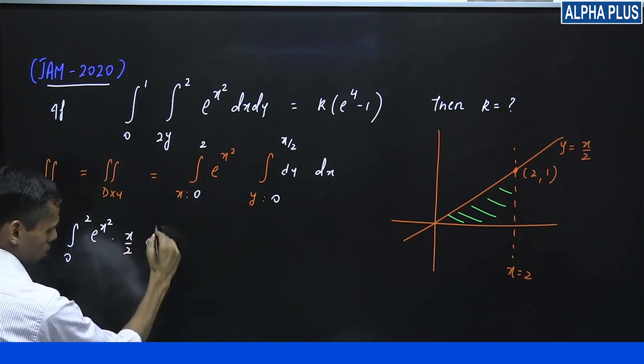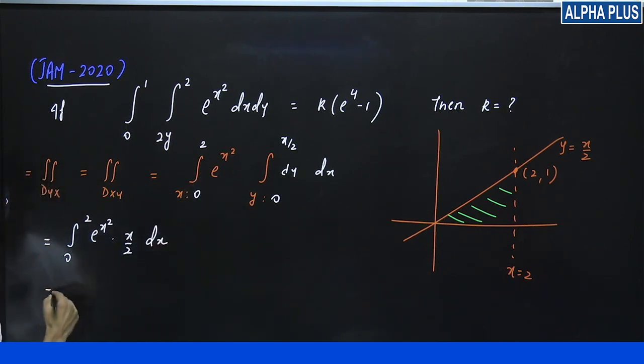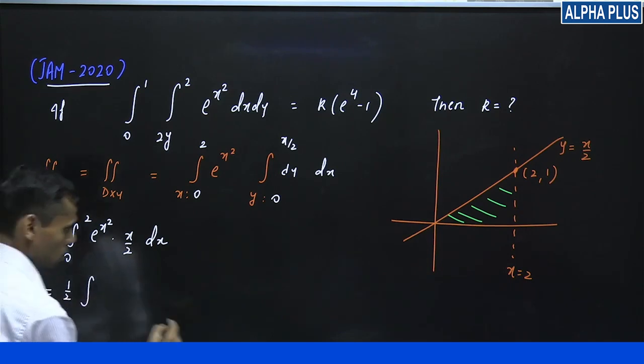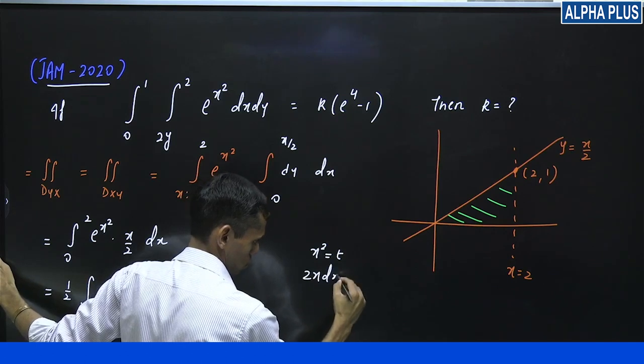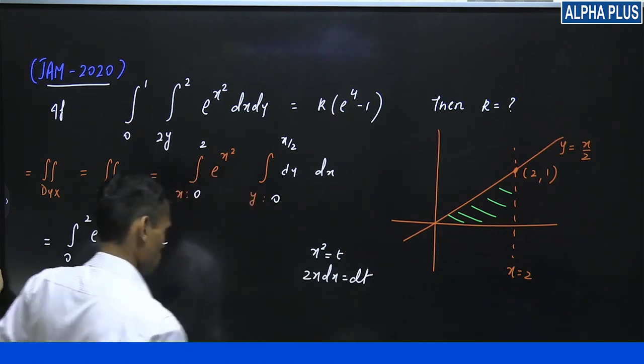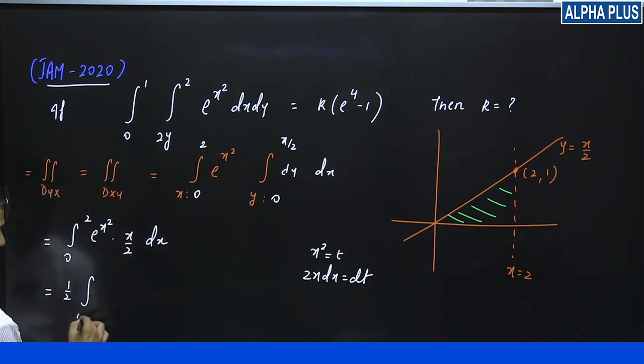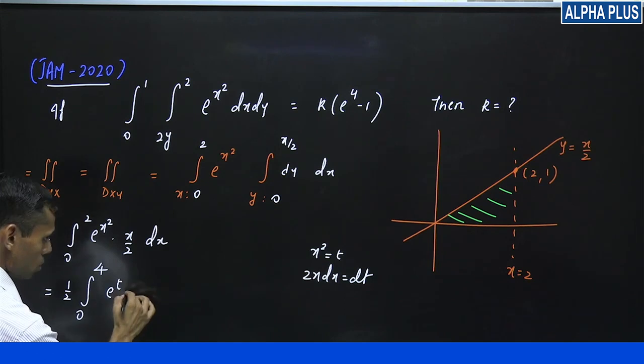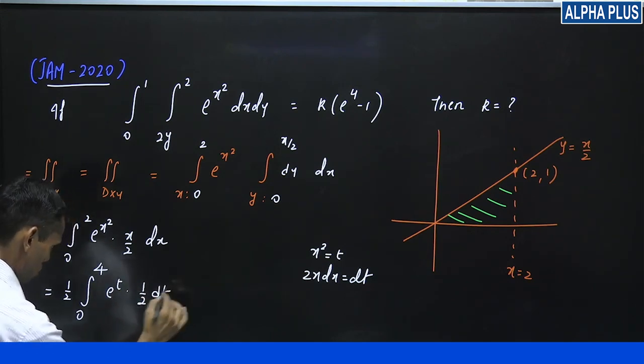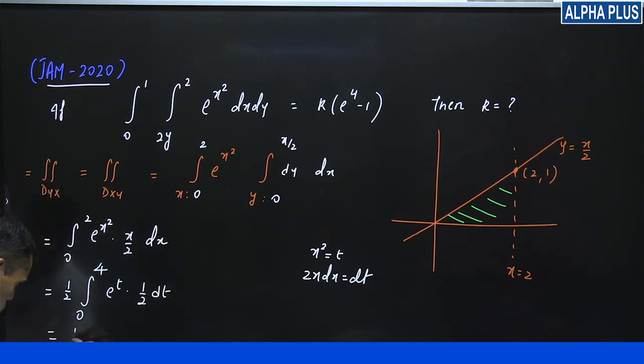y is between what two functions. k is 0 to 4, k is 1 to 4, simple question.